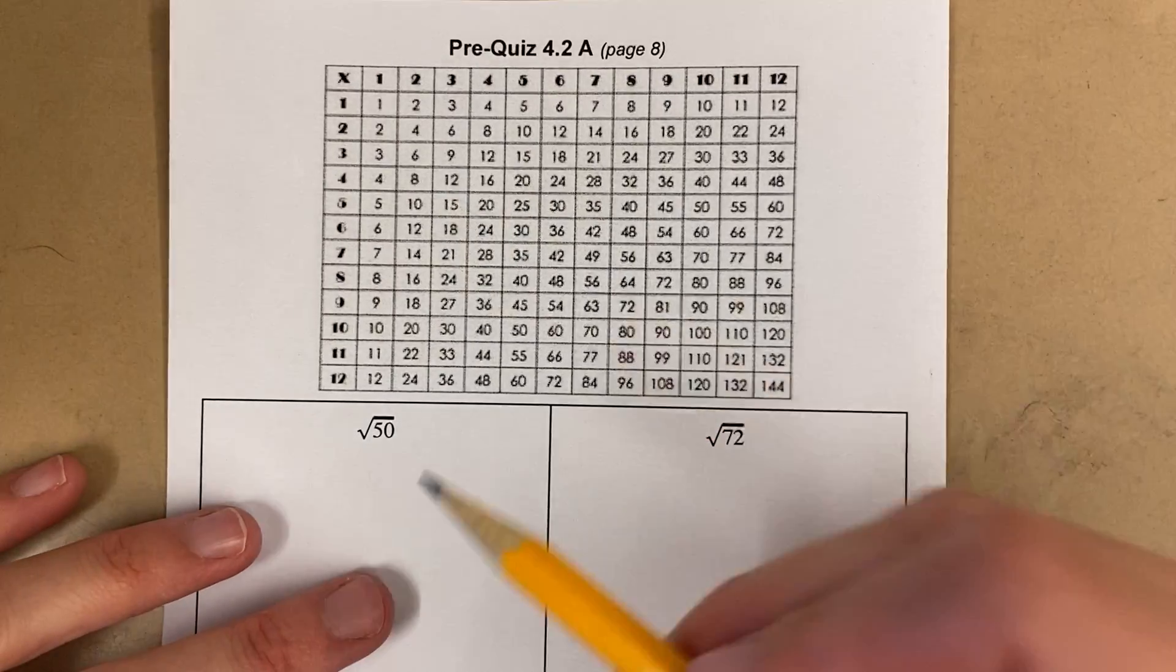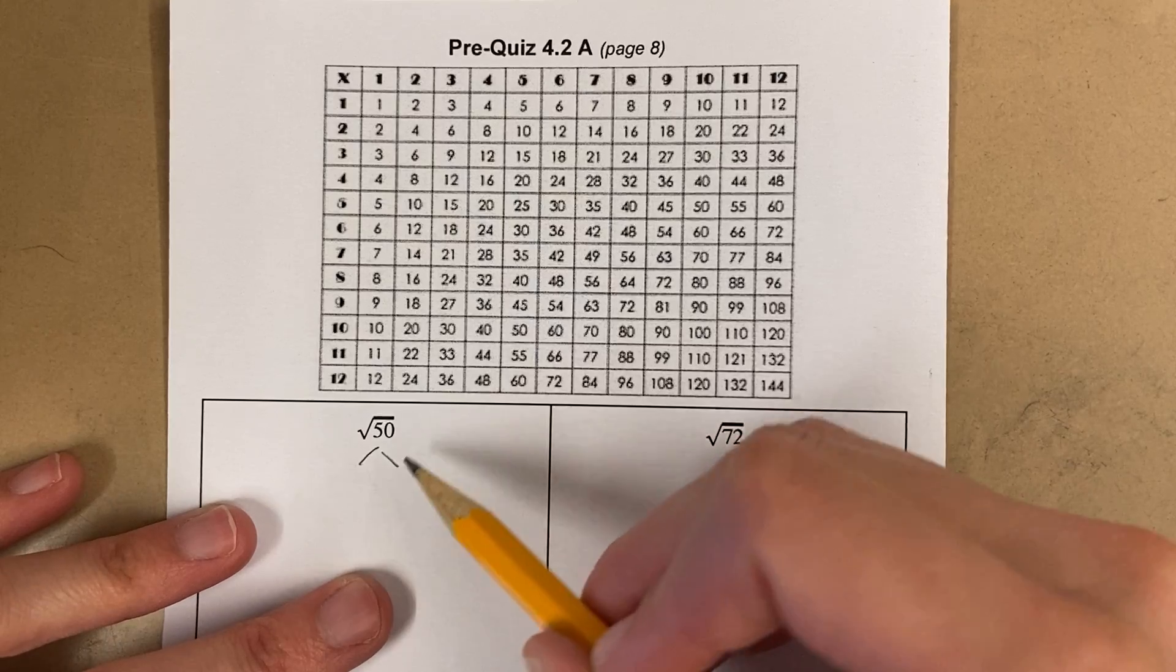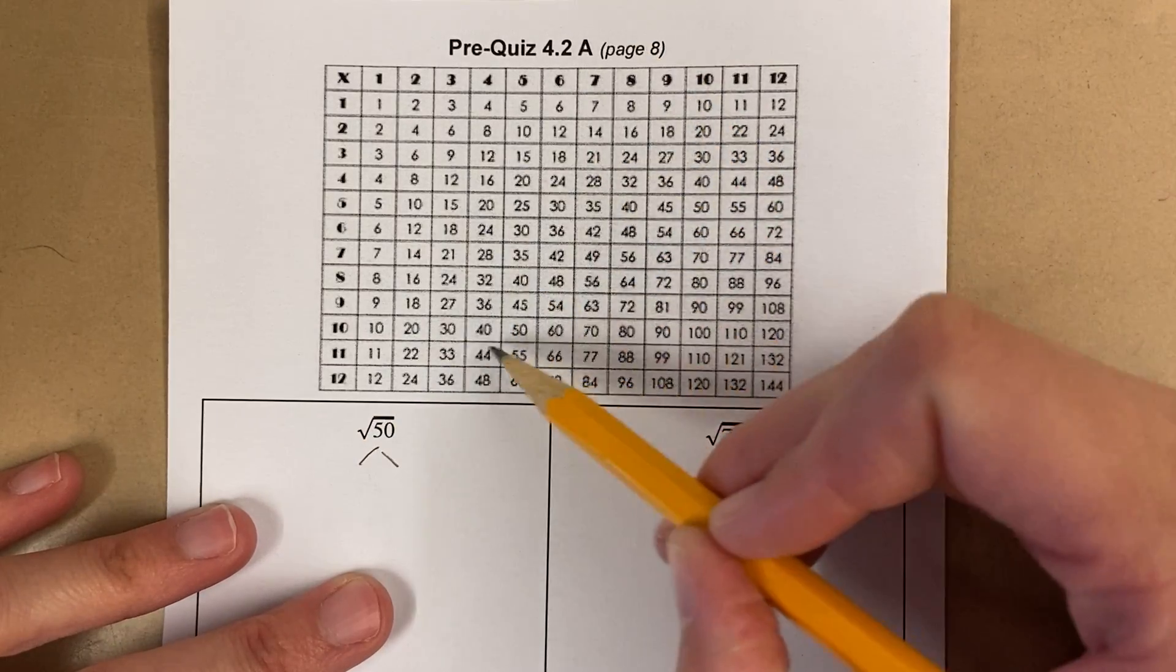All right, let's simplify these radicals. I first need to factor 50. I need two numbers that multiply to 50. So I'm looking for the number 50 here.